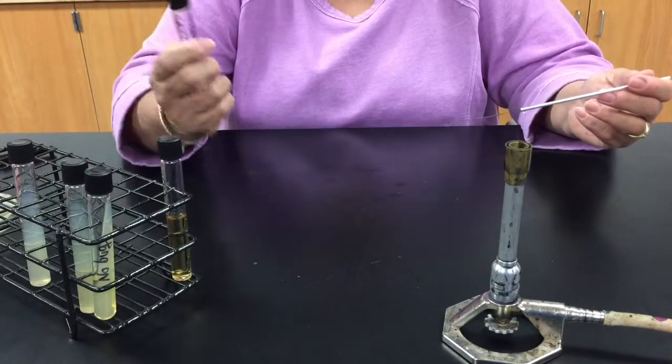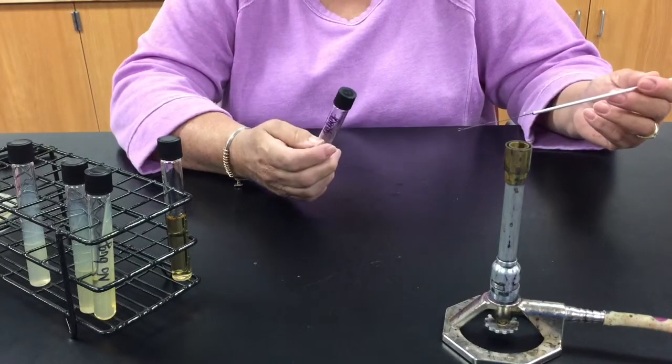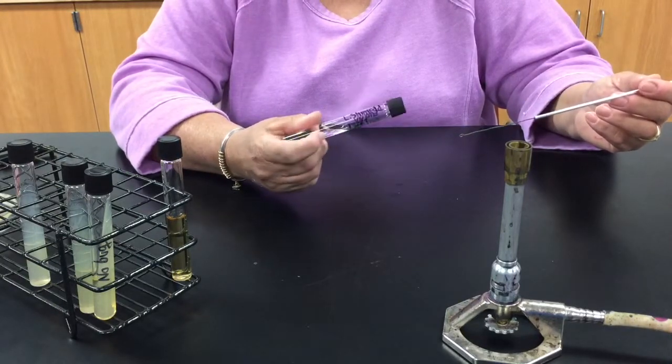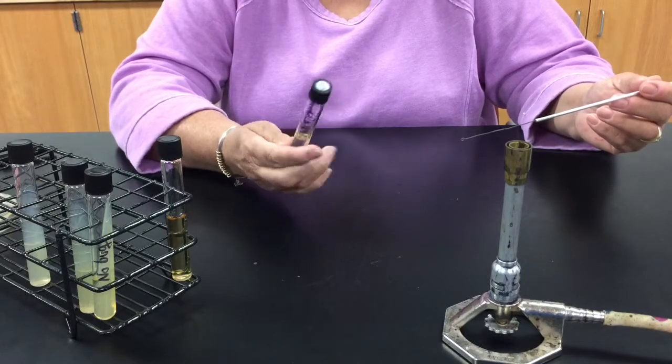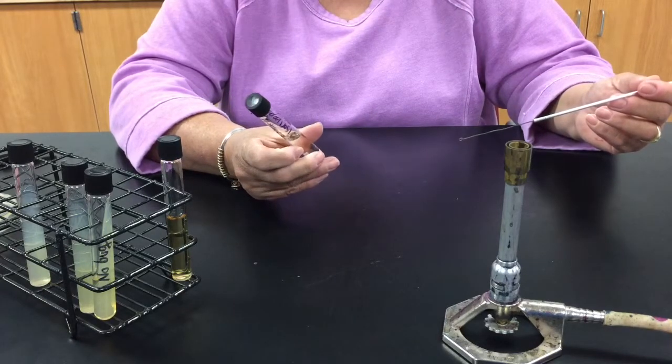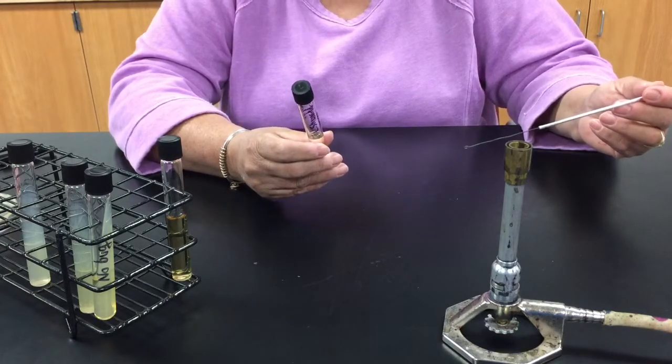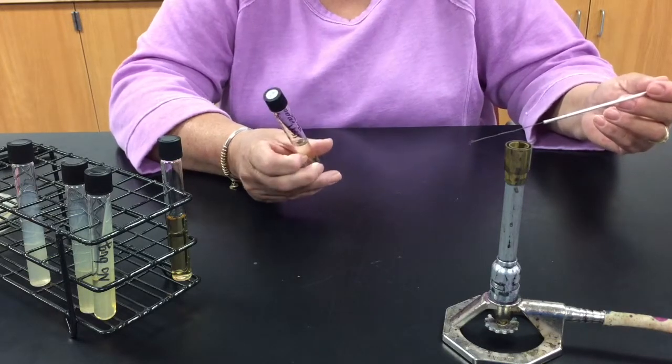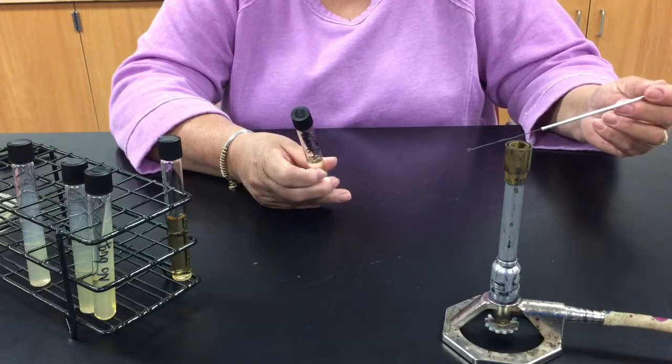Then I'd obtain a fresh tube of tryptic soy broth. Before I make my inoculation, I would label the tube. I've written on here my name, my lab section, the date, and the name of the organism. Because I'm not using one today, I just wrote 'no bug' on the tube.